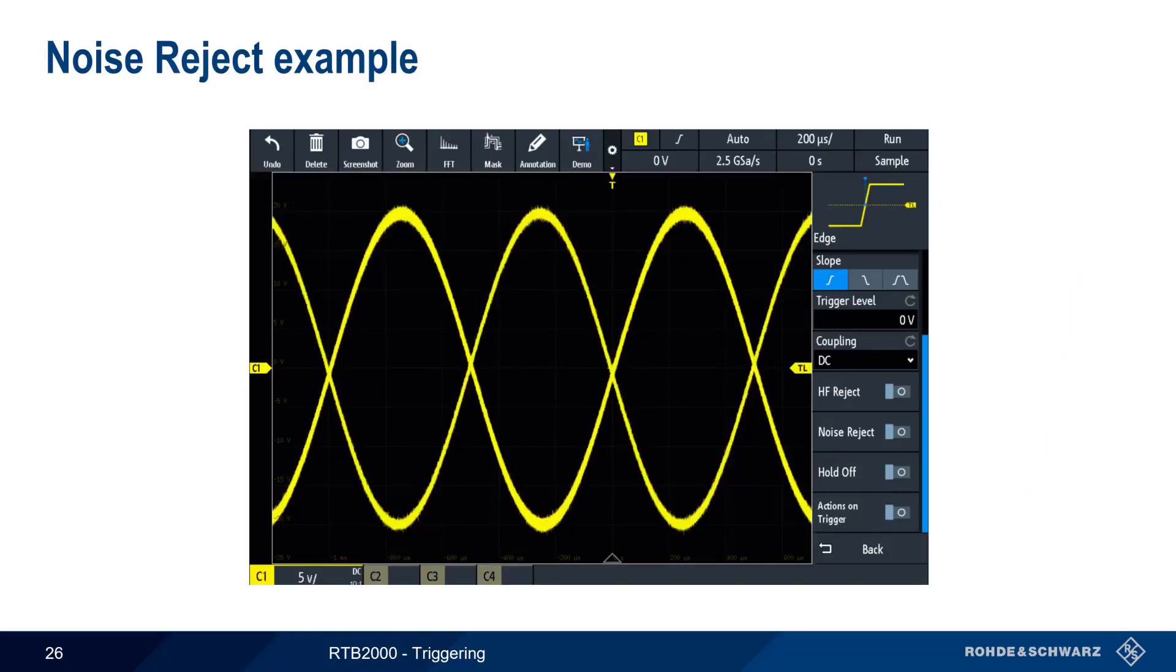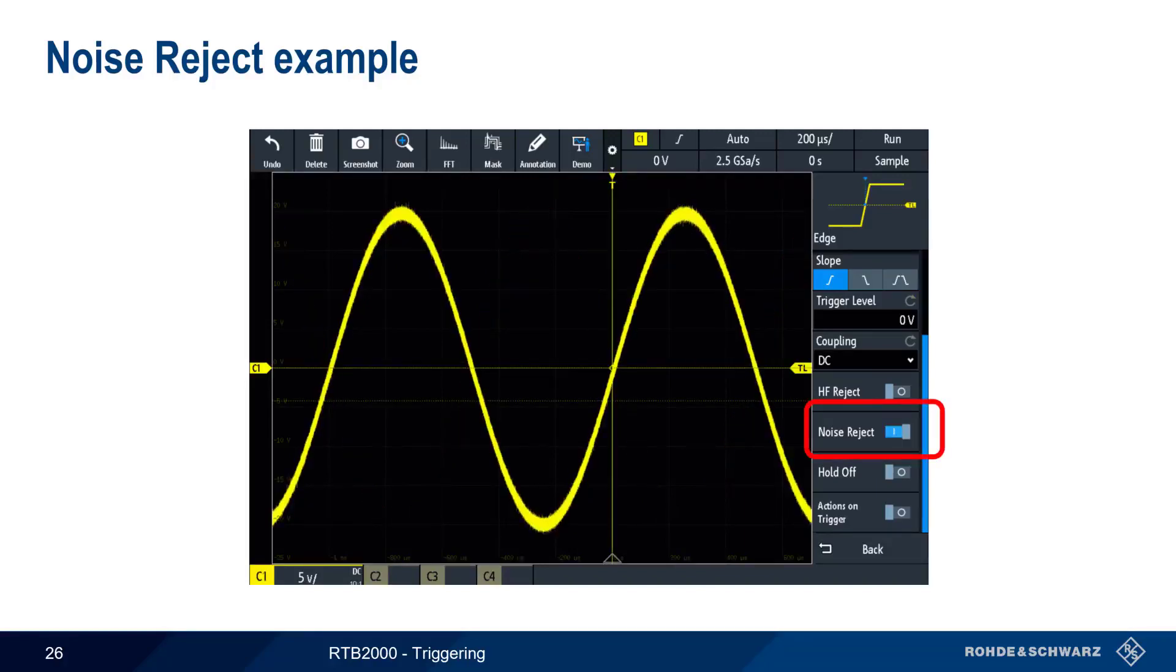In this example, the noise on our sinusoidal input signal makes it difficult to get a stable edge trigger. However, enabling noise reject removes the noise from the trigger signal and provides a stable waveform on the screen, without removing or altering the waveform itself.